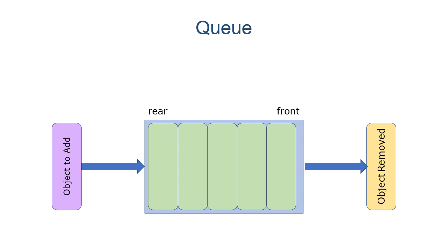So as a review, this is what a queue looks like. We have some data structure that allows us to store objects in a linear fashion, and then we have a front and rear. We remove items from the front of the queue, and we add items to the end of the queue.